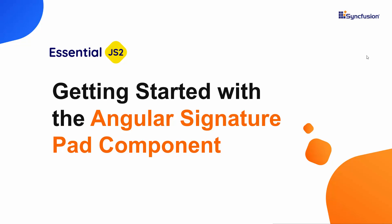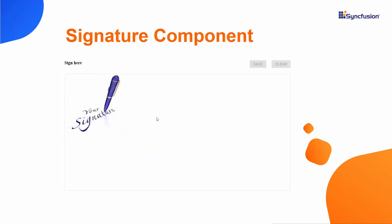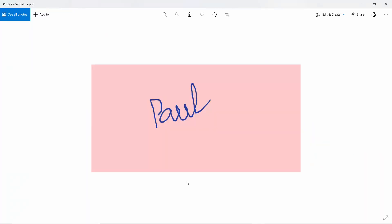Welcome to this getting started tutorial about the Syncfusion Angular Signature Pad component. Using this signature pad, you can draw smooth signatures as vector outline strokes using variable width bezier curve interpolation. It also allows you to save signatures as images and vice versa.